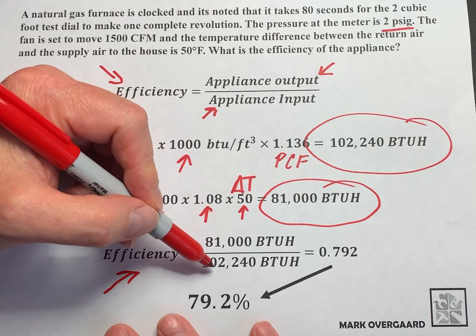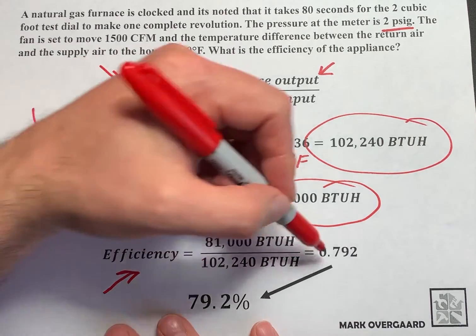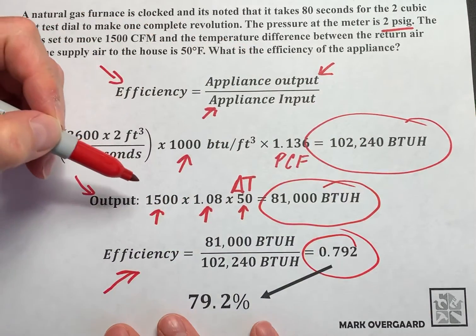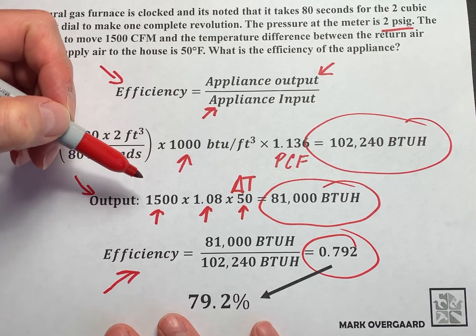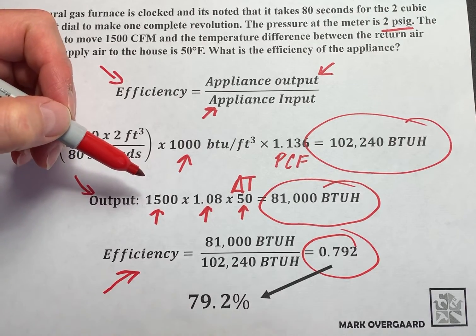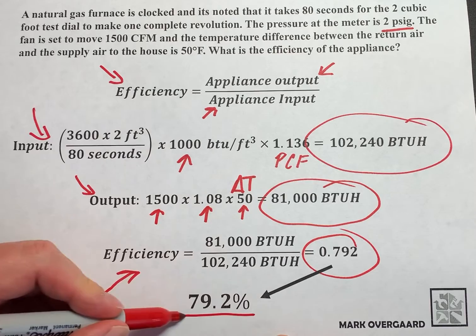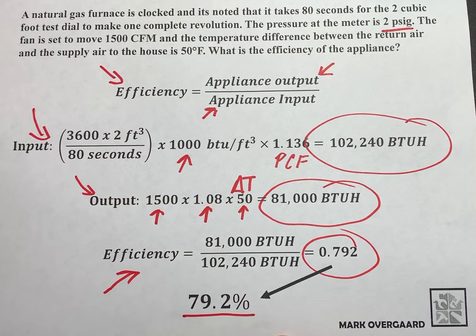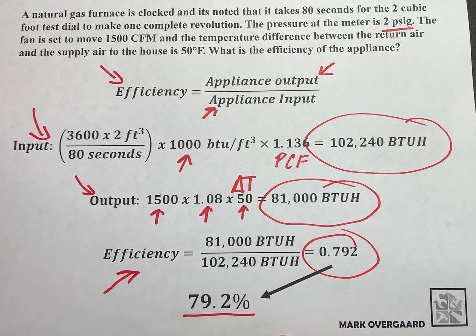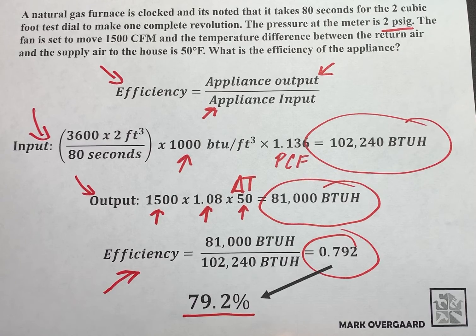81,000 divided by 102,240 and we get 0.792. To get that to a percent, we multiply it by 100 and we get 79.2%. There you go. There you have it. That is finding the efficiency.